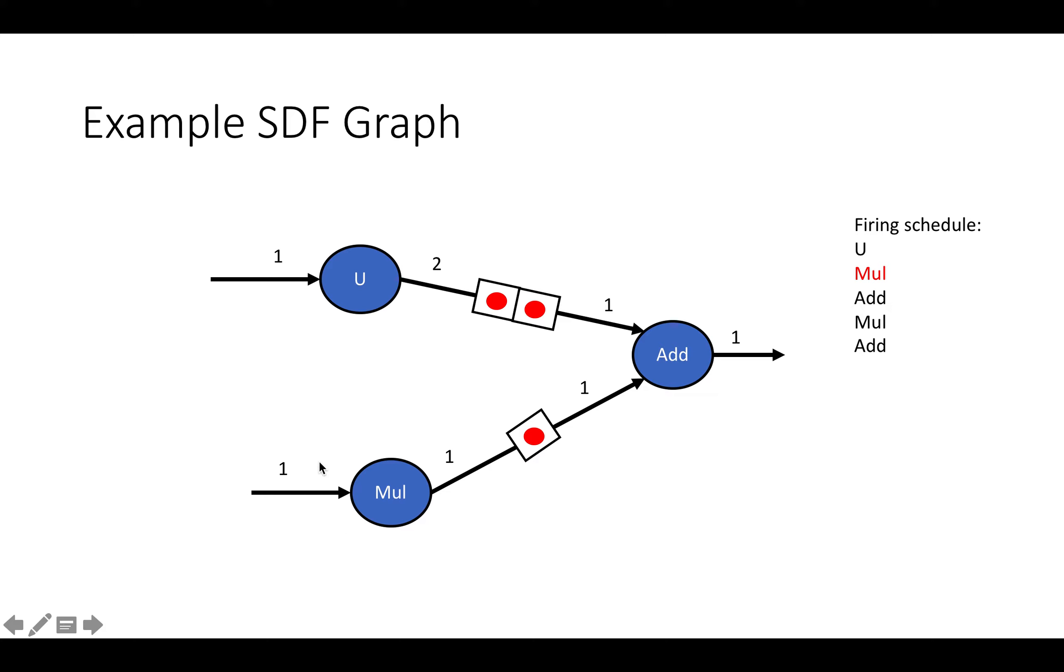Then we're gonna fire our multiplier, which is going to take in a piece of data and put it into its FIFO. Then we're going to fire the adder, and the adder is going to consume one piece of data from each FIFO. So now the multiply FIFO is empty, and the upsample FIFO contains only one thing.